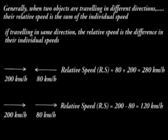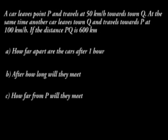Let's take an example. A car leaves point P and travels at 50 kilometers per hour towards point Q. At the same time, another car leaves town Q and travels towards P at 100 kilometers per hour. If the distance PQ is 600 kilometers: How far apart are the cars after one hour? After how long will they meet? How far from P will they meet?